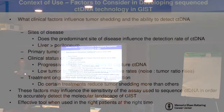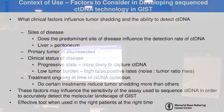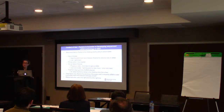Some things to consider when developing ctDNA as a tool: What clinical factors influence tumor shedding and ability to detect ctDNA? Does the site of disease affect tumor shedding? Whether the primary tumor is present or not — does that make a difference? The clinical status of disease matters — if it is progressing, you're more likely to capture ctDNA. With low tumor burden, are you more likely to have false positive rates? And does treatment ongoing at the time of ctDNA collection affect our ability to detect ctDNA? These factors may influence the sensitivity of the assay used.